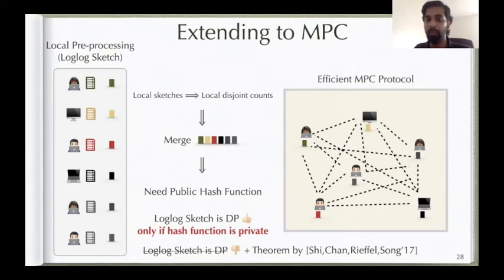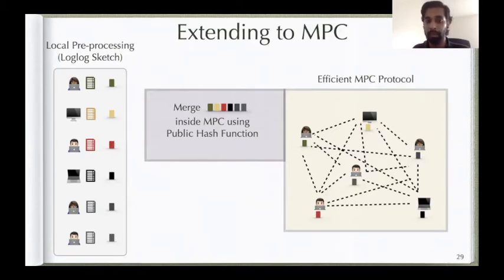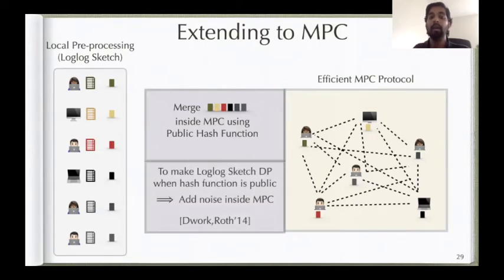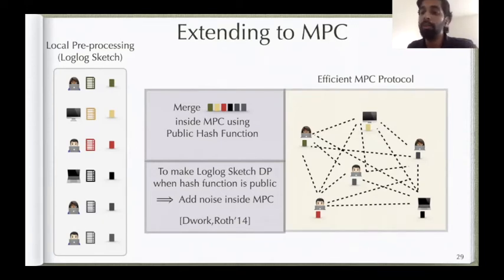To resolve this, we merge all sketches inside the MPC protocol using the public hash function, and then add extra noise through the MPC protocol to achieve differential privacy even with a public hash. We compute some noise in a distributed way and add it to the output — this uses the Laplace mechanism introduced by Dwork and Roth. However, our protocol is much more efficient than theirs.